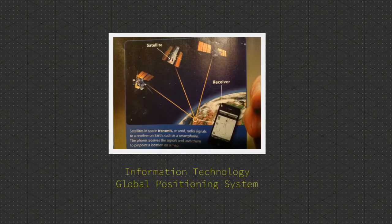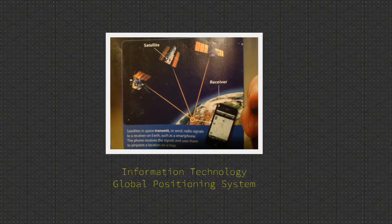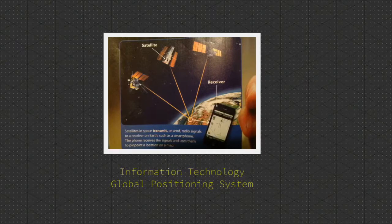Satellites in space transmit or send radio signals to a receiver on Earth, such as a smartphone. The phone receives the signal and uses them to pinpoint a location on a map.